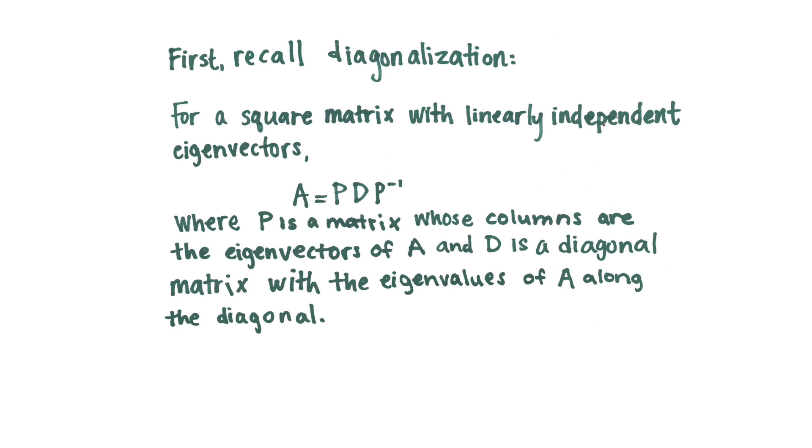You can write it as PDP inverse, where P is a matrix with columns that are the eigenvectors of A, and D is a diagonal matrix with the eigenvalues of A along the diagonal, and P inverse is just the inverse of P.